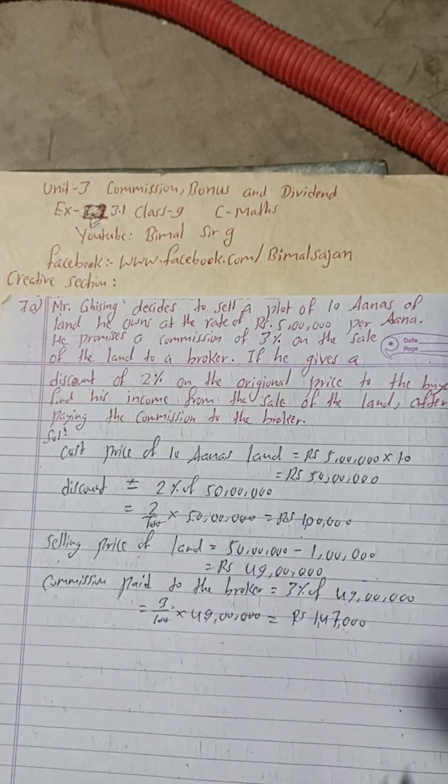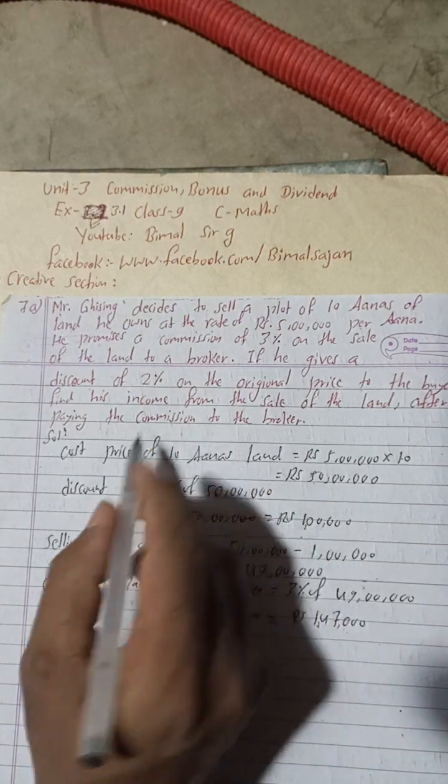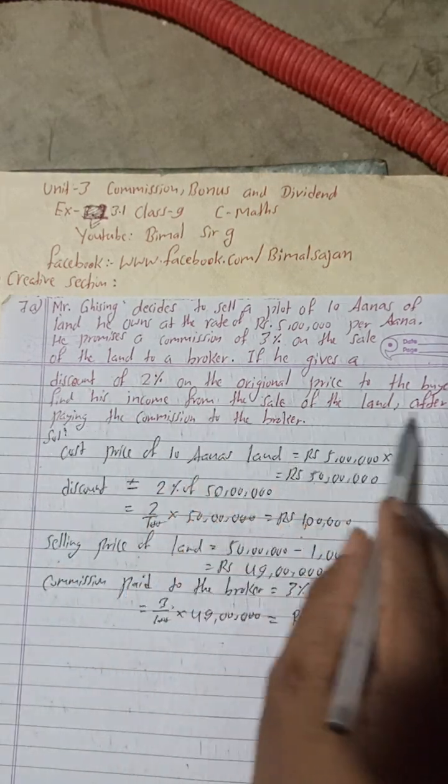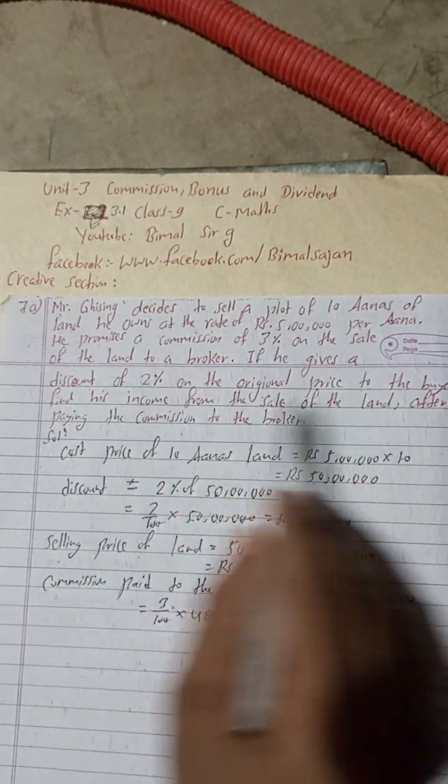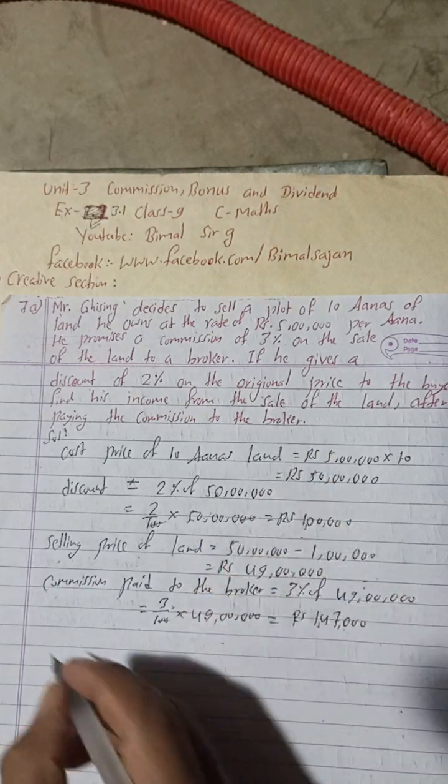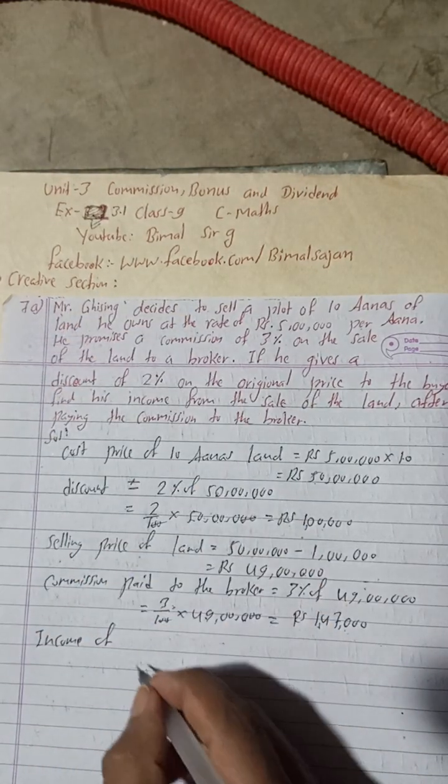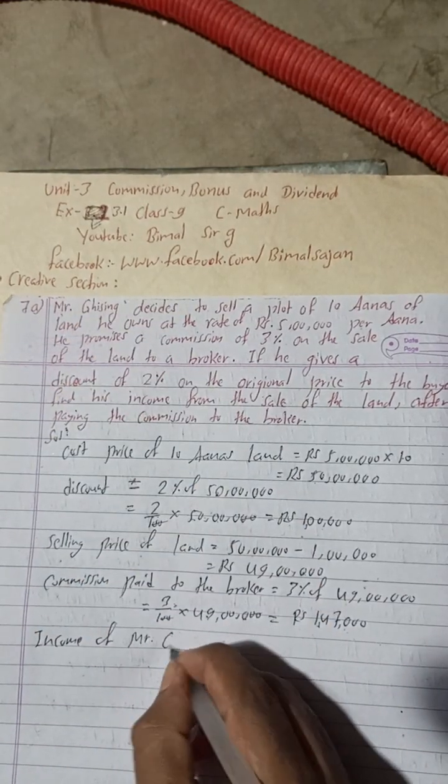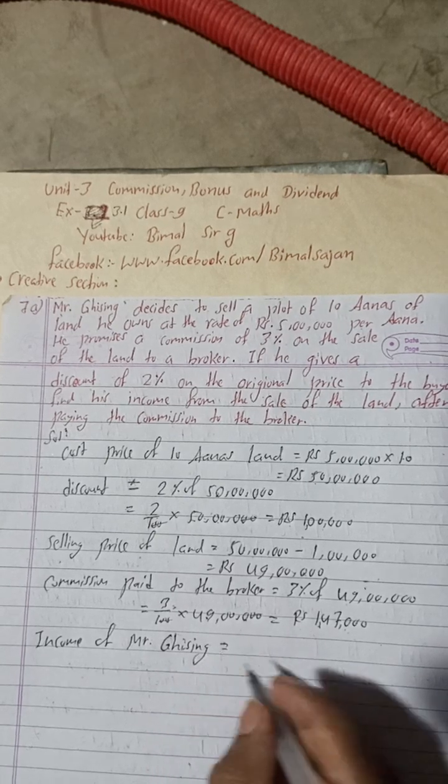Now income of this Ghi Singh will be how much? This 49,000 minus this commission amount. So we can now write here, after paying the commission, if he gives a discount of this much to the buyer, find his income. His income from the sale, so his income, or income, income of Mr. Ghi Singh, Mr. Ghi Singh is equal to how much?